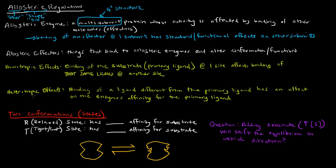Let me get into homotropic and heterotropic effects. Homotropic effects are defined as binding of a substrate — often called the primary ligand — at one site, which affects the binding of that same ligand at another site. An example of a homotropic effect is hemoglobin and oxygen: oxygen binding hemoglobin at one site increases the affinity for oxygen at the other three sites. That idea is called cooperativity, which is a particular type of allosteric regulation — and more specifically, a homotropic effect.